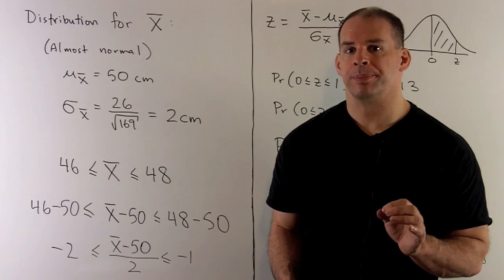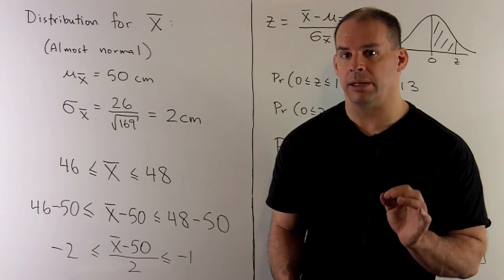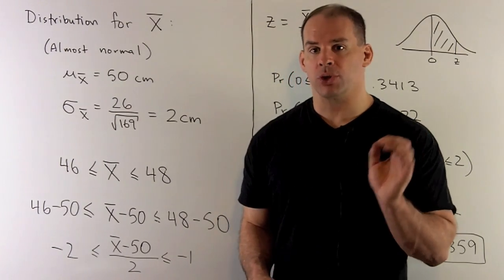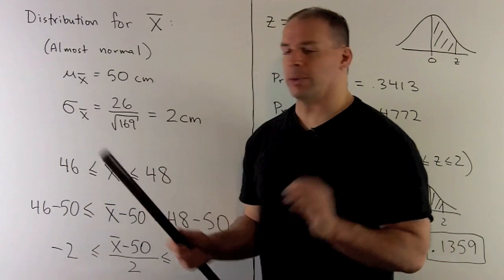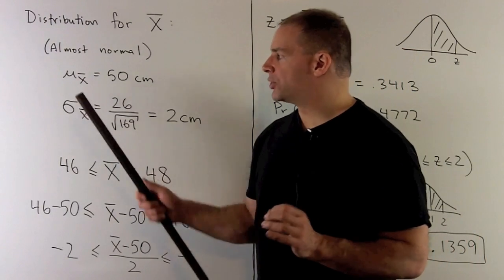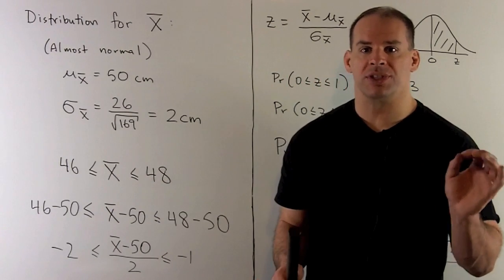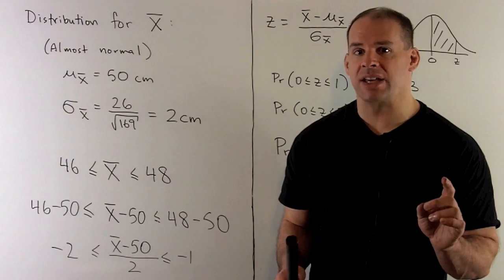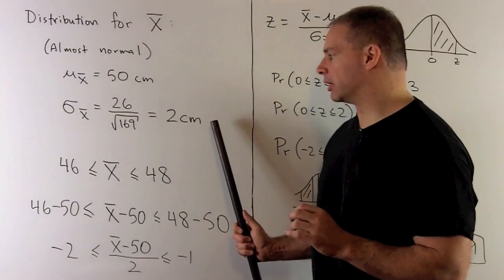In our special case, the sampling distribution for the mean, that's the distribution for x bar, is almost normal. The new mean is equal to our old mean, 50 centimeters. The new standard deviation is equal to our old standard deviation, 26, divided by the square root of the sample size, which is 13. So we'll get 2 centimeters.